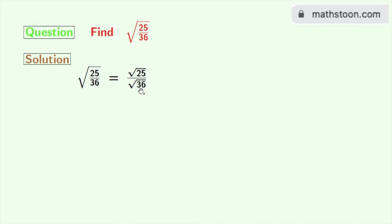Here we have used the rule of square root of a by b is equal to square root of a divided by square root of b. Here a is 25 and b is 36.